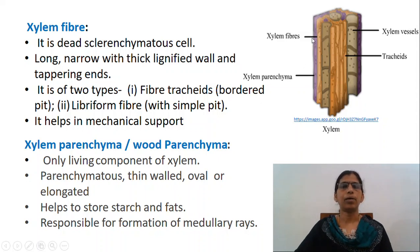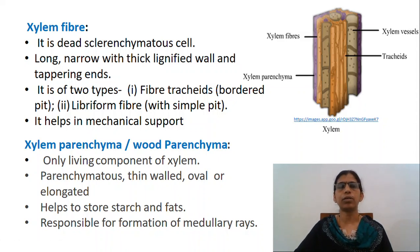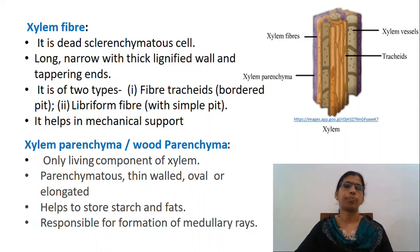The xylem parenchyma or wood parenchyma is the only living component of the xylem. They are parenchymatous, thin-walled, oval or elongated, and present in both primary and secondary xylem. It mainly helps to store starch and fats. It is responsible for the formation of medullary rays. The functional xylems — tracheids and vessels — help in conduction of water and minerals from base to top of the plants. They also help in the formation of soft and hard wood. Xylem parenchyma stores food and xylem fibers help in mechanical support.